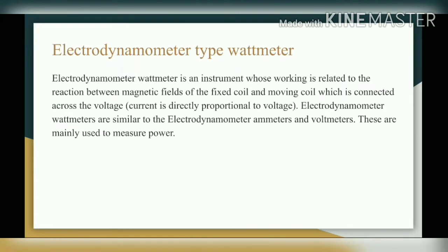Electrodynamometer type wattmeter is an instrument whose working is related to the reaction between the magnetic fields of the fixed coil and moving coil, which is connected across the voltage. Electrodynamometer wattmeters are similar to electrodynamometer ammeters and voltmeters, and these are mainly used to measure power.